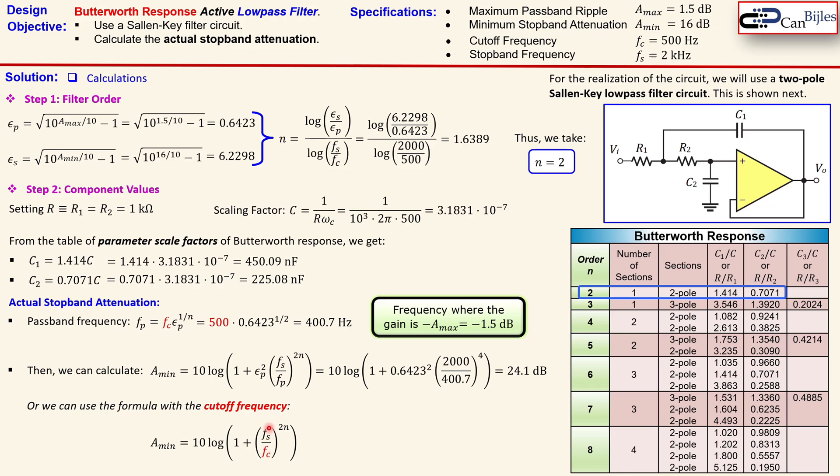So you don't have to go to the f_p which is the passband frequency. So you just substitute here the stopband frequency, cutoff frequency and also your order and then you're actually done. And this is exactly the same result. You see here also 24.1. So the change is that you don't use 400.7 hertz and this epsilon, but you only use your cutoff frequency.